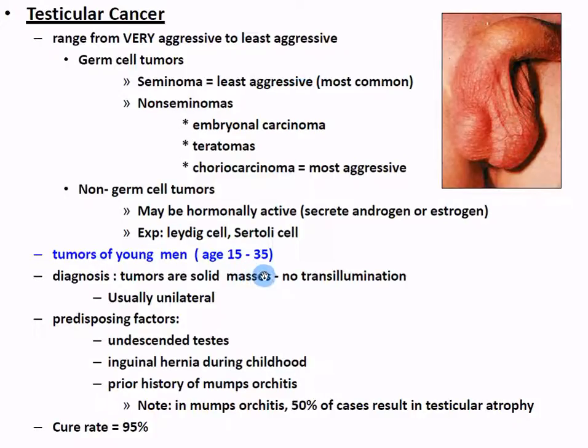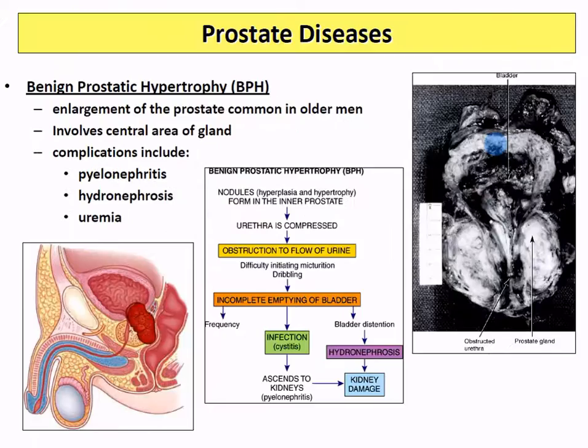To diagnose testicular cancer, you can feel a solid mass, or when shining a flashlight behind the scrotum, you'll see an abnormal mass that doesn't let light through - no transillumination, indicating a thick solid mass. Most cases are unilateral so only one testis is removed. Causes include undescended testis (which increases cancer risk), torsion, mutations, radiation exposure, and infections. Orchitis (testicular infection) is commonly caused by measles and mumps in childhood, and by STDs in adulthood. Both can increase testicular cancer risk, as the infection-inflammation process can trigger mutations.